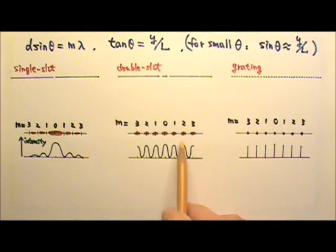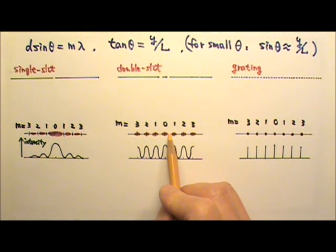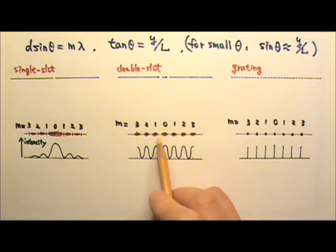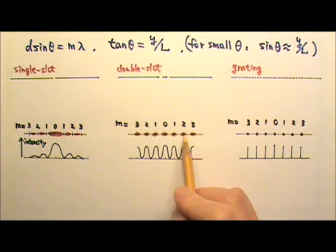For double slit, the first dark fringe is in between 0 and 1, so this is m equals 0.5, 1.5, 2.5. And the bright fringes are 0, 1, 2, 3.